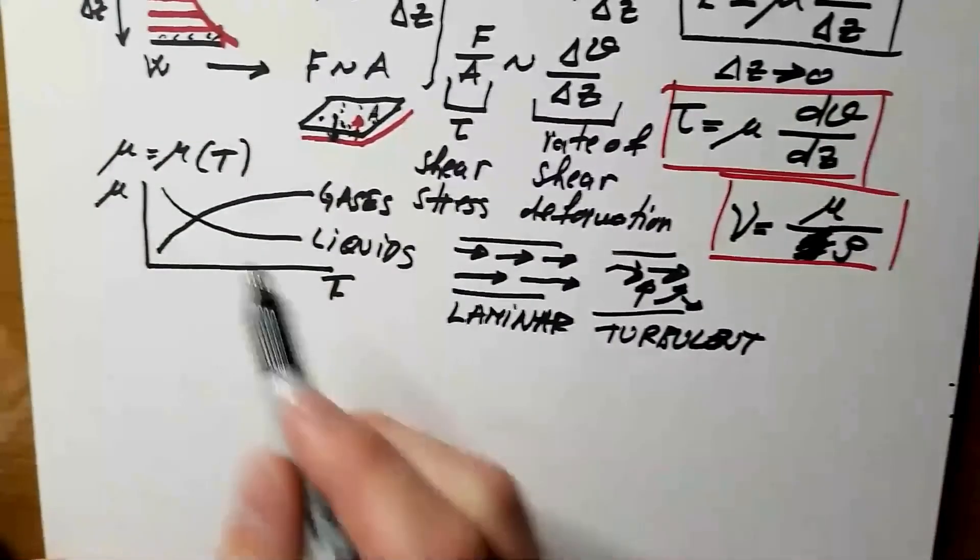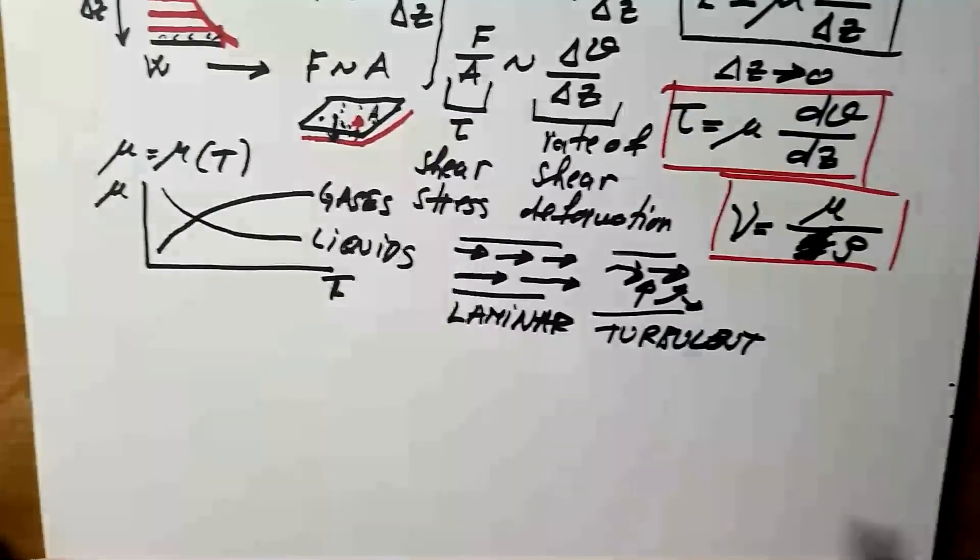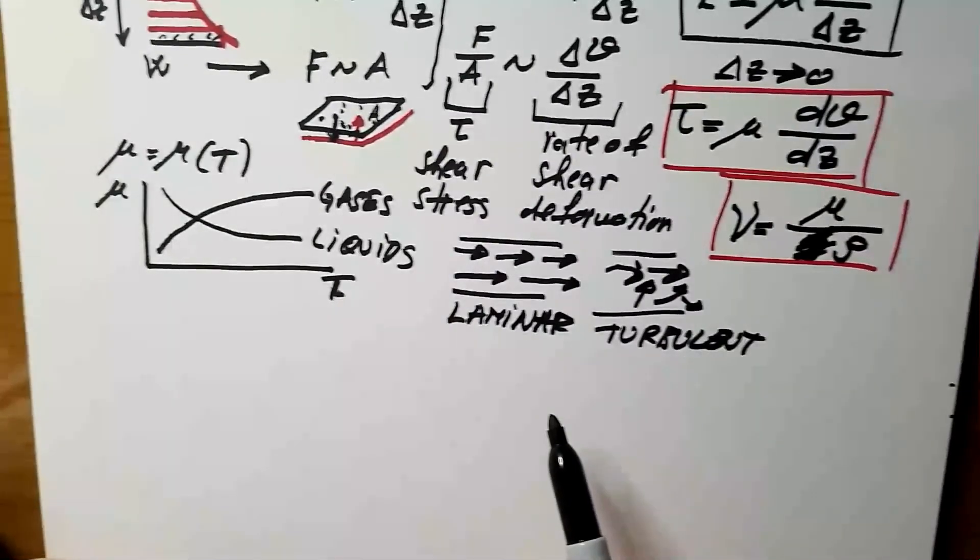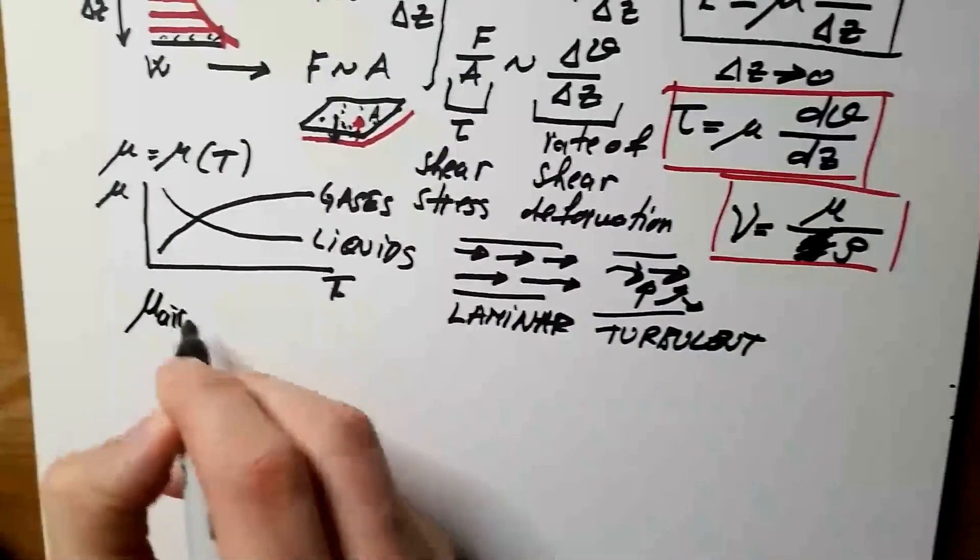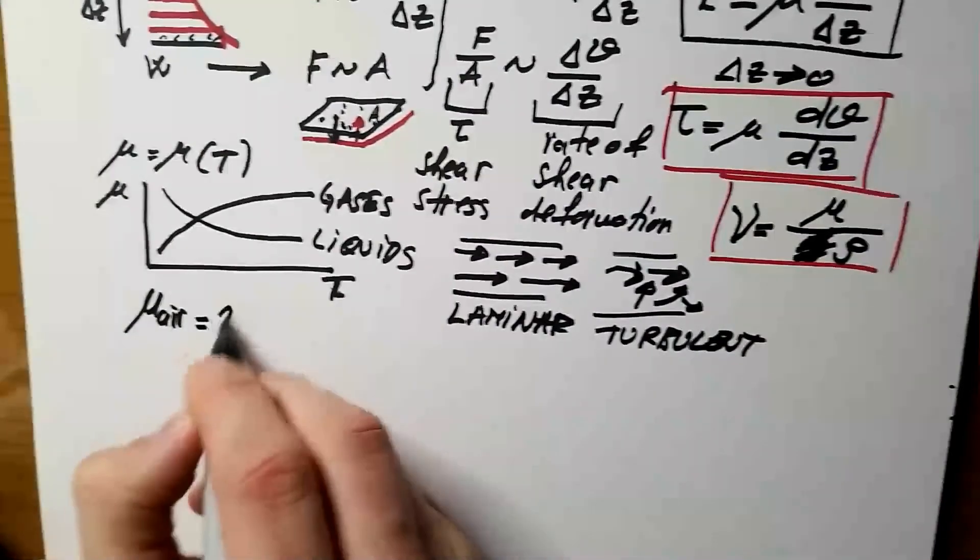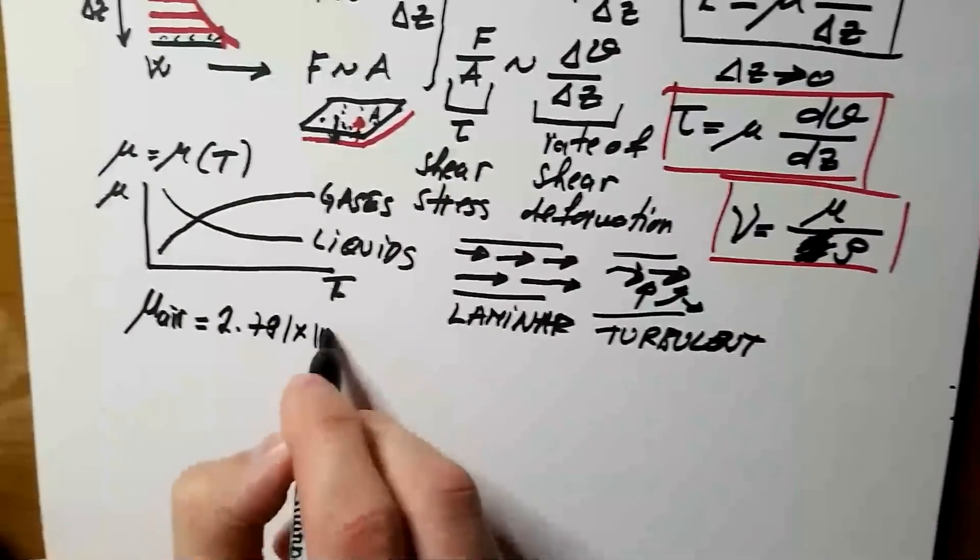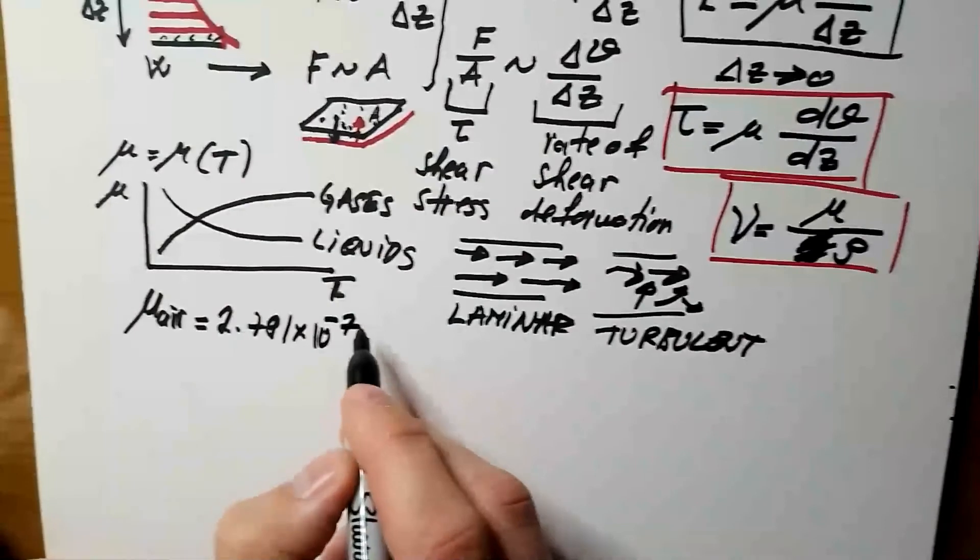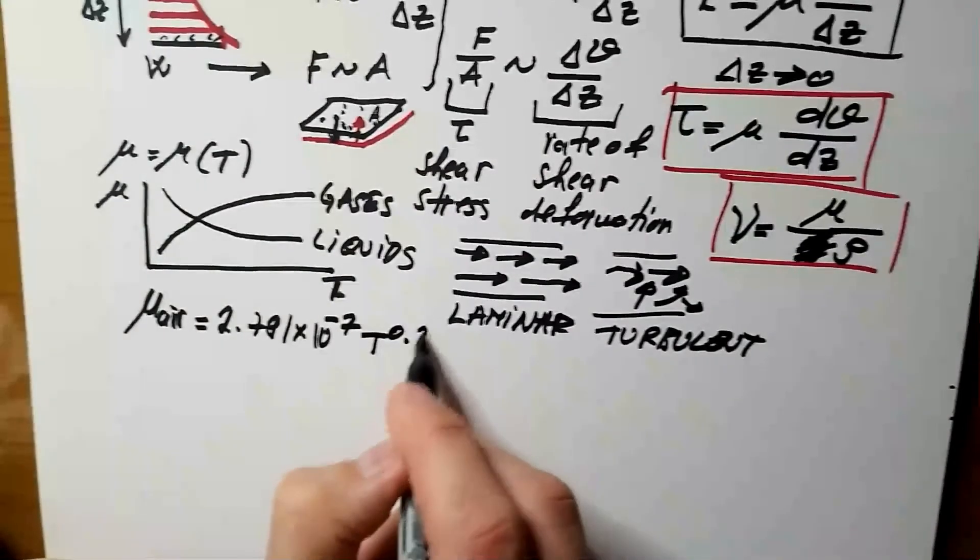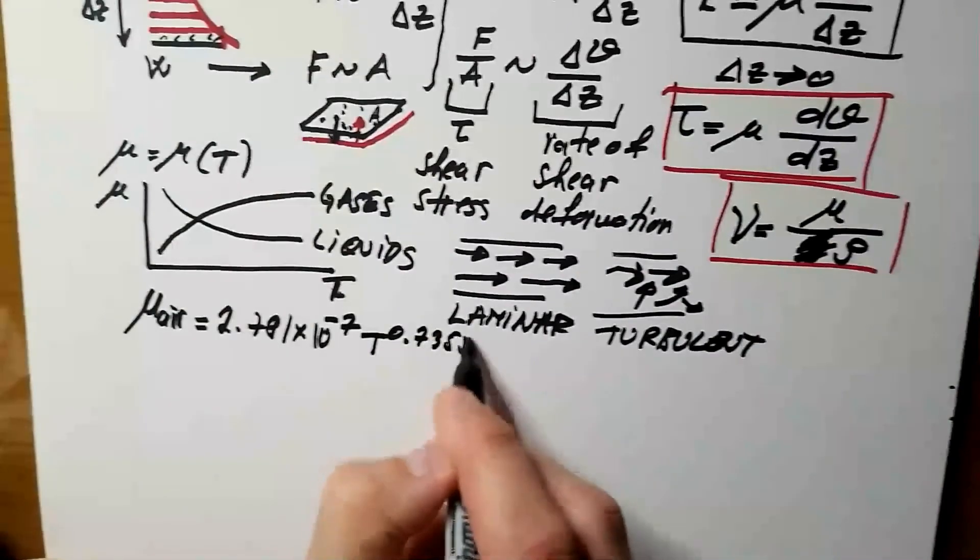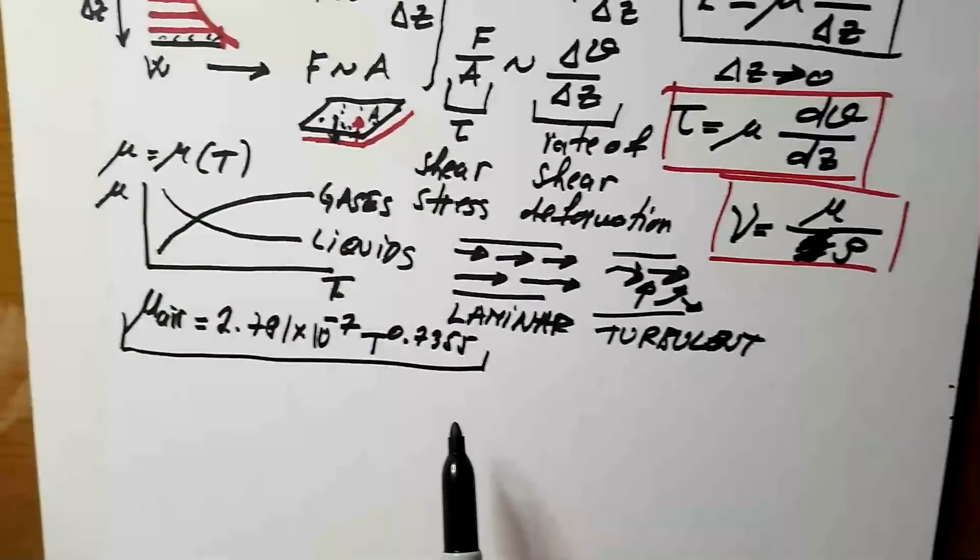The very last thing that I will say here is, if you are interested to know how mu depends on T for air, because this is atmospheric science channel, then I will tell you that mu for air is, this is highly empirical, 2.791 times 10 to the power of minus 7, temperature to the power 0.7355. So please don't memorize this, but use it if you need it.